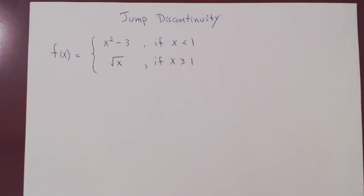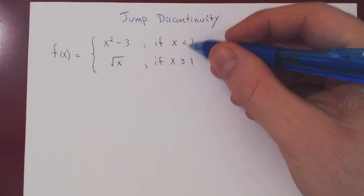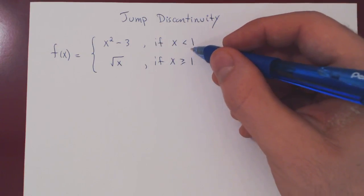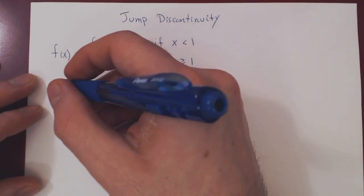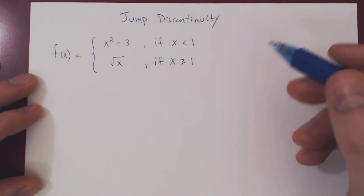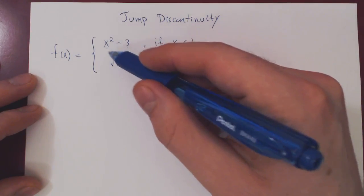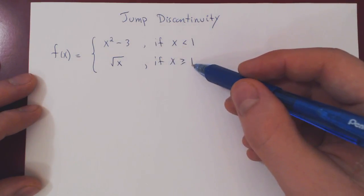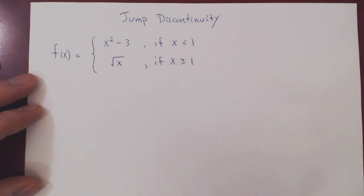What we should be wary of is that we are piecing two different functions around 1. Whenever you piece two different functions at a given value of x, you always have to consider that point as a possible point of discontinuity. So we must look at the limit from the left and from the right, since to the left of 1 we use the polynomial and to the right of 1 we use the square root function.